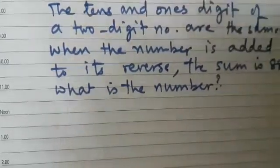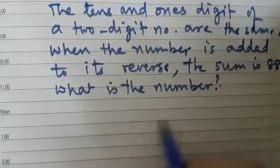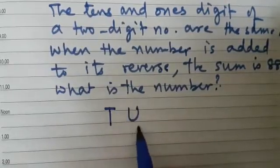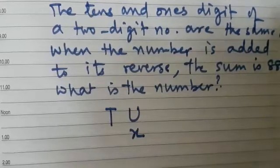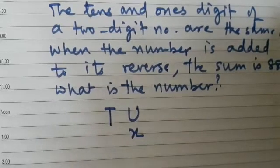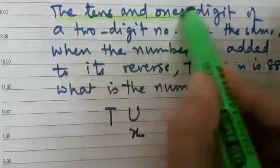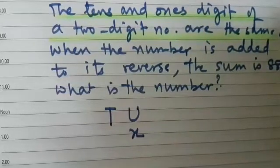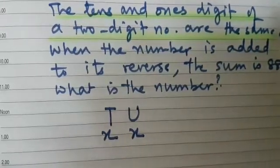So here we have a two digit number. In a two digit number, we assume that the digit at the units place or the ones place is X. And here it is given that tens and the ones digit of a two digit number are the same. So at the tens place also, we have X.